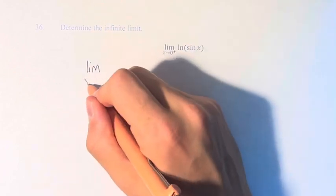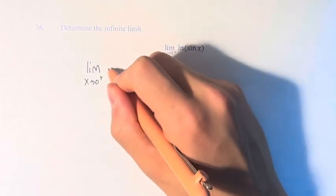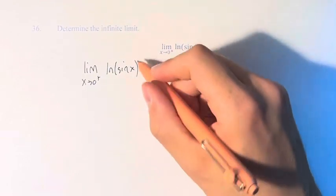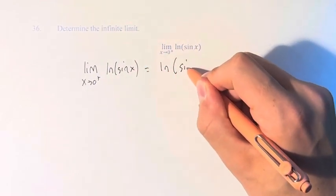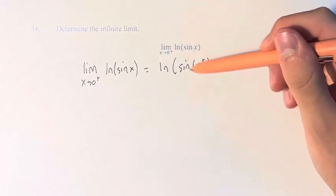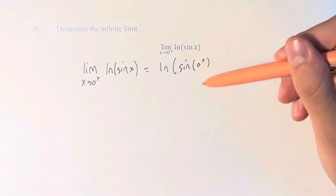So to solve this limit, what we need to do is plug our value into the equation. So this is going to be the ln of sine of the values approaching 0 from the right, which means they're greater than 0.